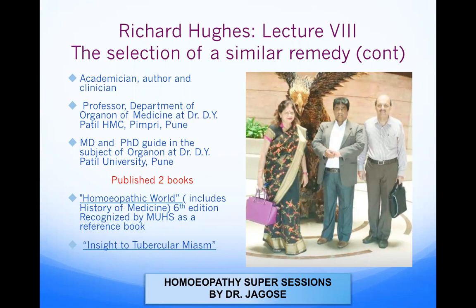The methods to select a similar remedy are either the generic method, the specific method, or the individual method. In Chapter Seven, Richard Hughes described only the generic method and the specific method. He hasn't said anything about the individual method, so in Chapter Eight Richard Hughes will be talking at length about the individual method.